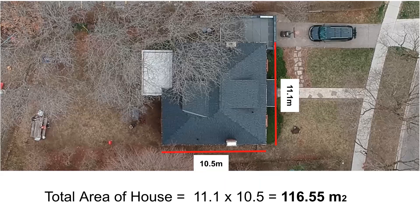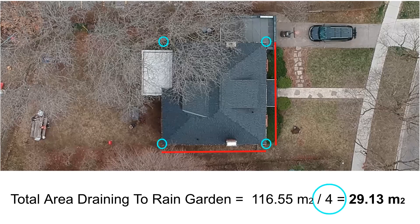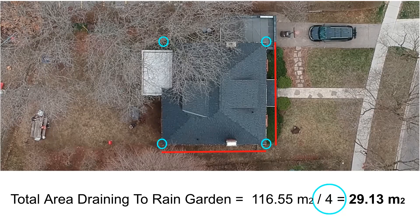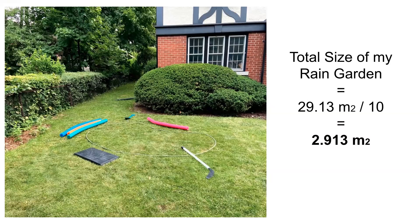The total area of my house — length times width — is 116.5 square meters. I have four downspouts, one on each corner, and the house fairly equally sends water to each, so I divide that total area by four. That gives me 29.13 square meters draining to the downspout where I'm building my rain garden. Taking a tenth of that, the surface area of my rain garden should be about 2.913 square meters. That doesn't seem massive, but that's what it looks like in my yard.